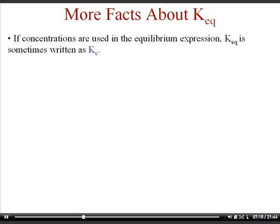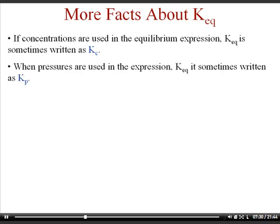If concentrations are used, it's usually called K sub C — the little C stands for concentration. If you're using gases and pressures, it's usually called Kp. There are other subscripts that appear in later chapters: Ka and Kb values for acids and bases, a Kw value for water, and Ksp, which is a solubility product. The basic point is don't be alarmed when you see the little subscript changing — it's still an equilibrium constant.